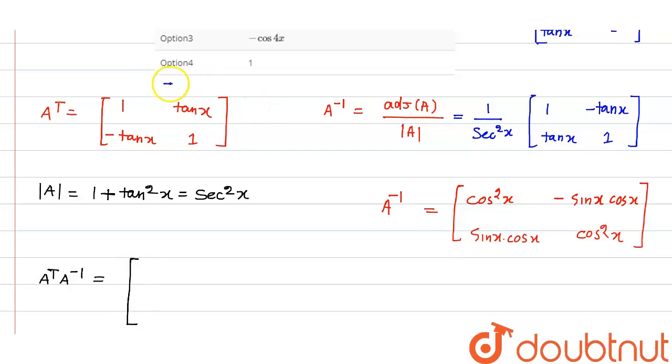A transpose into A inverse, that is equal to what? That is this will multiply with row to column, row to column. It means what? 1 cos square x, cos square x. And here we have what? Plus sin square x because tan x into sin x into cos become sin square x.